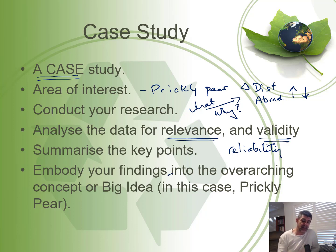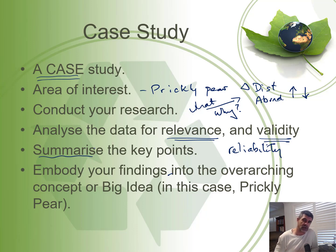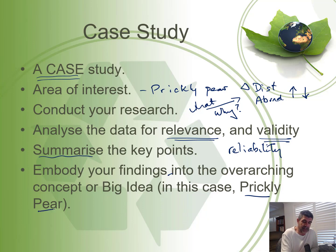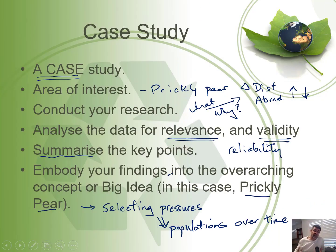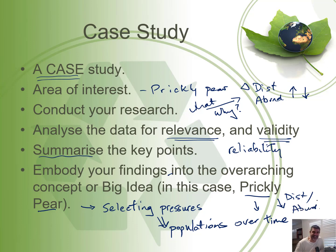Once you've got all of that material, you then need to summarize — start to pull that back into the format of your presentation. In the case of the cane toads, it's going to be a poster. In this case, just a short report, just to give you a little bit of an idea of how to prepare this. And then embody your findings into the overarching concept. The overarching concept here is selection pressures and how they change populations over time, relating that specifically to the distribution and abundance of the prickly pear. So that's your task — let's get to it. Thanks for watching.